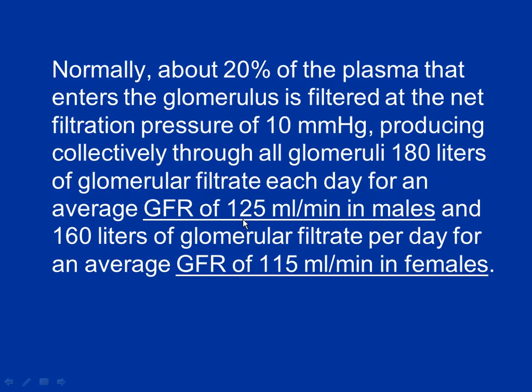Normally about 20% of the blood going into the kidney gets filtered; 80% goes right back into circulation. That 10 mmHg net filtration pressure is what we calculated. If you do the math based on 5.5 liters of blood and 20% getting filtered, you actually calculate that 180 liters get filtered every day — enough to fill 90 two-liter bottles worth of filtrate. That's a lot of potential urine.